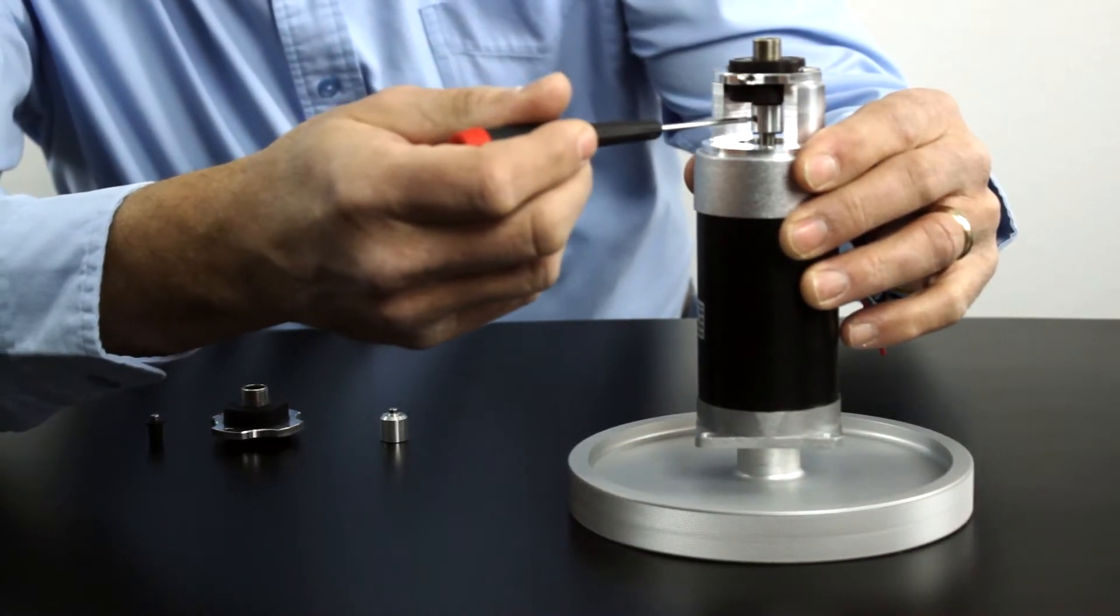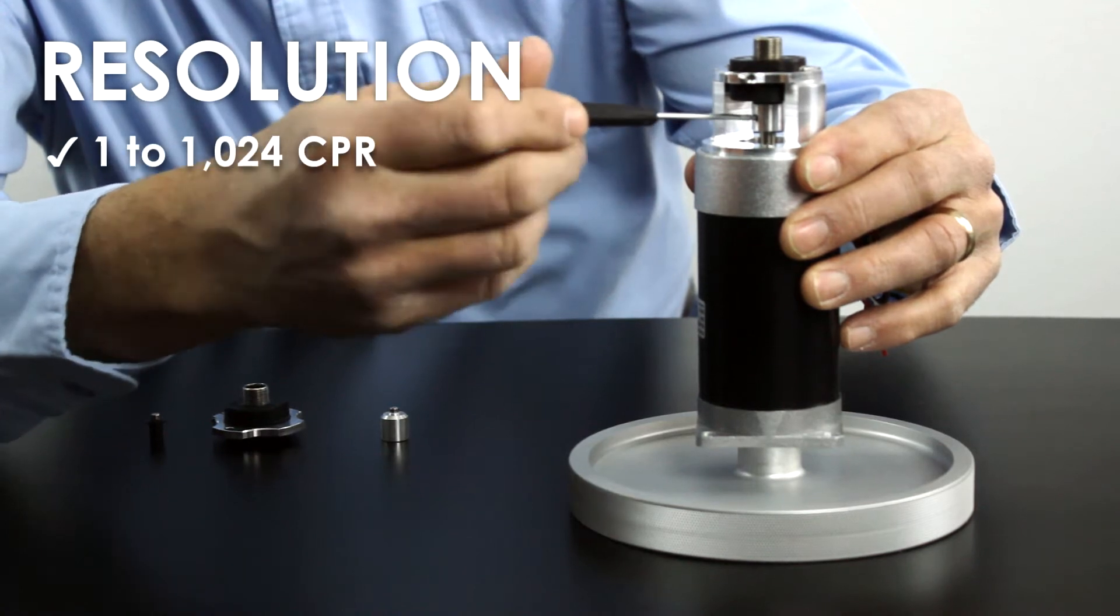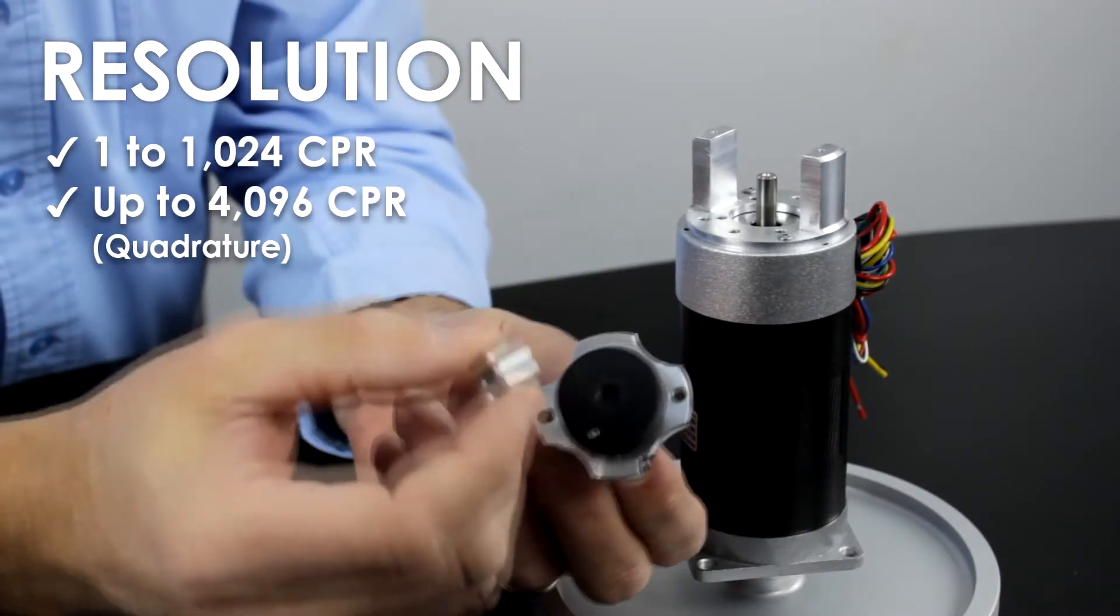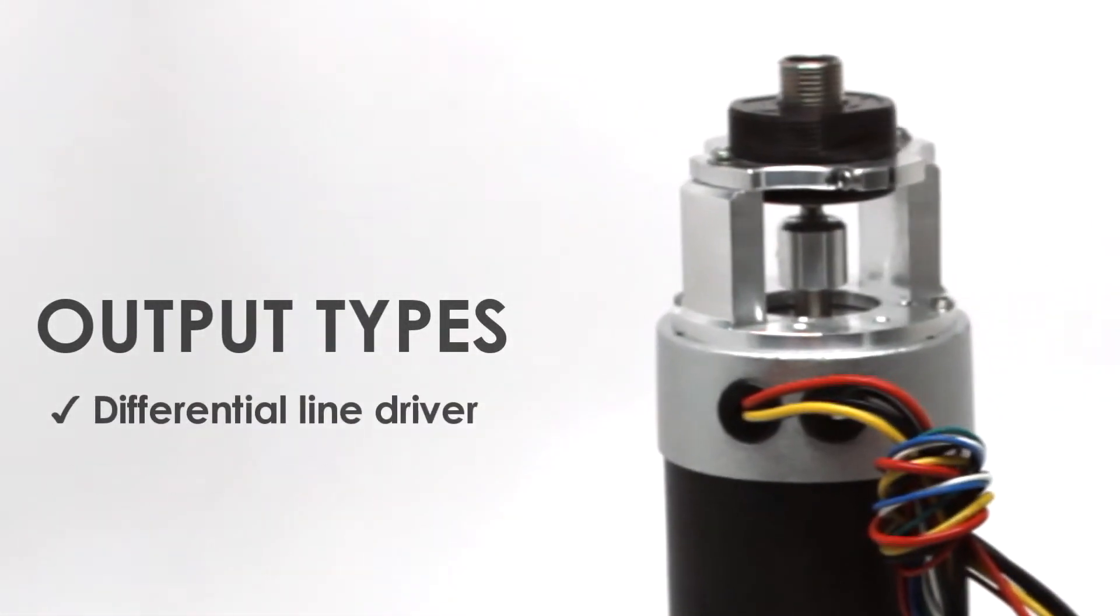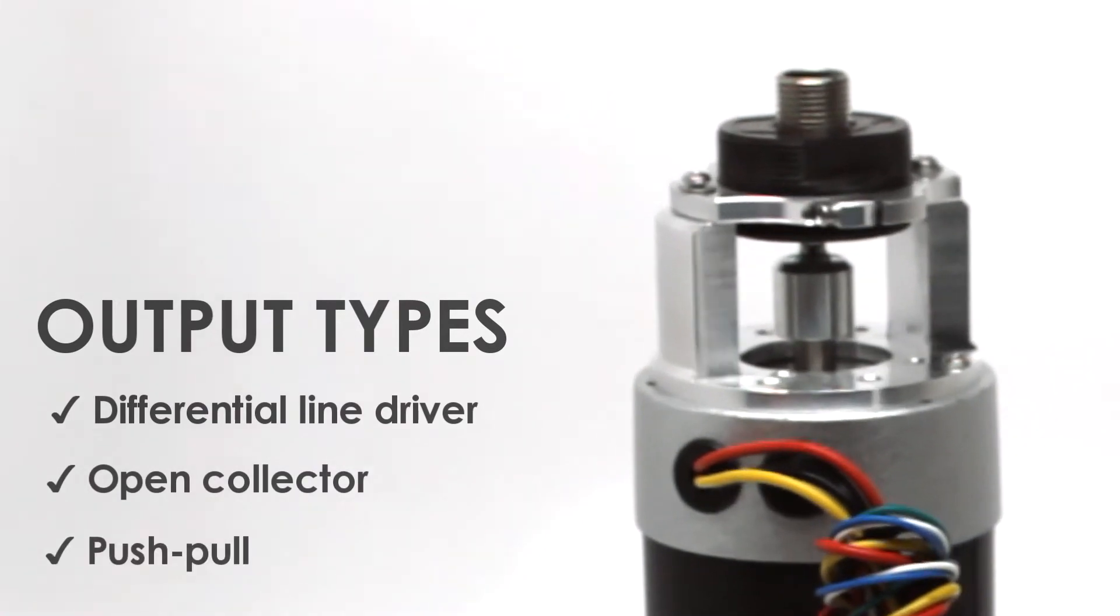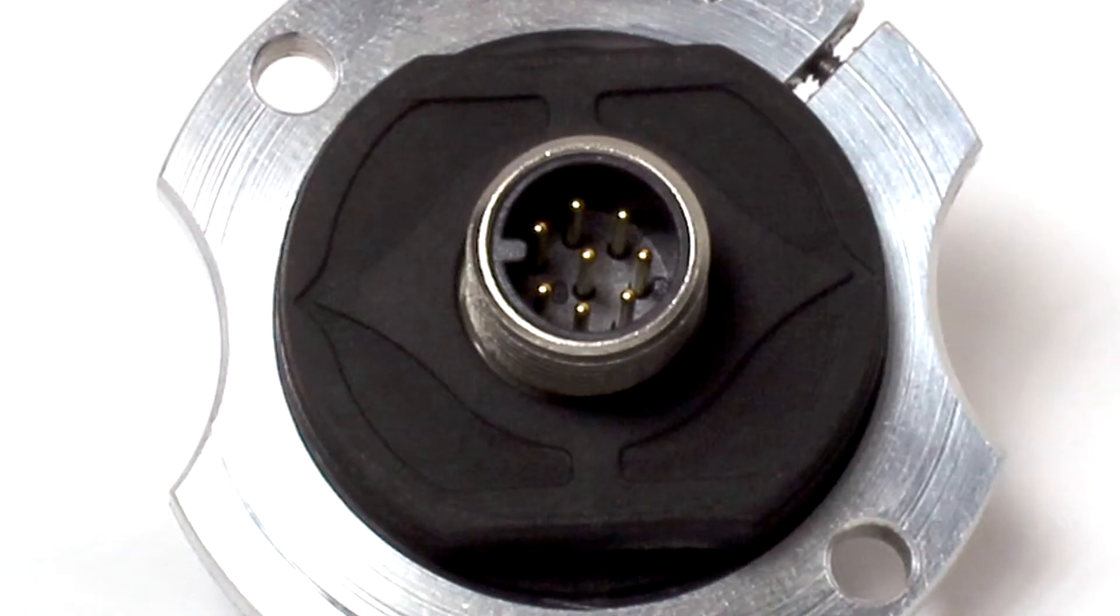The 30MT provides resolutions of 1 to 1,024 CPR, which enables up to 4,096 CPR with quadrature edge counting. Output types are differential line driver, open collector, or push-pull. The connector is an 8-pin M12.